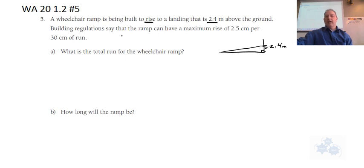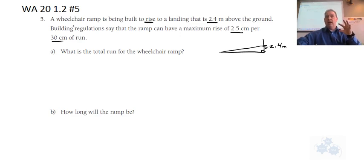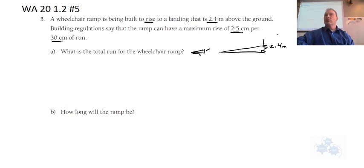Building regulations say that a ramp can have a maximum rise of 2.5 centimeters per 30 centimeters of run. So this is rise over run — that's our given slope, the slope that we have to match. In order for this to be legal, you have to have a certain slope. This would be like the example: 2.5 centimeters high and 30 centimeters for a run. And the real-life ramp has to match that slope — they have to be identical slope.